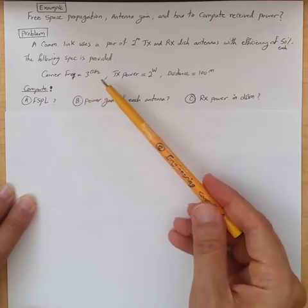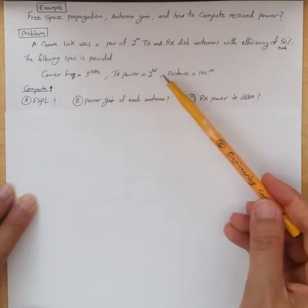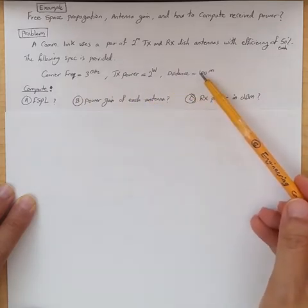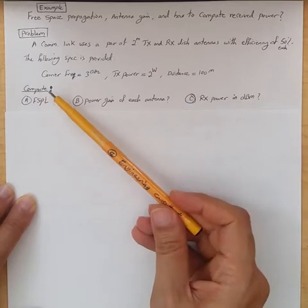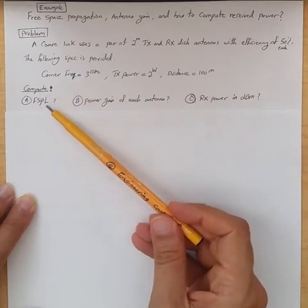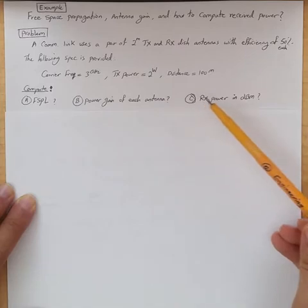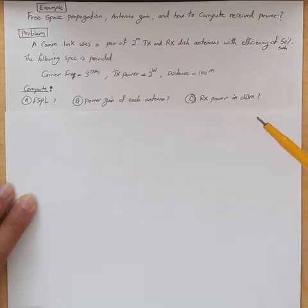Carrier frequency of 3 gigahertz, transmit power of 2 watts, and distance of 100 meters between antennas. The question is compute free space path loss, power gain of each antenna, and received power in terms of dBm watt.